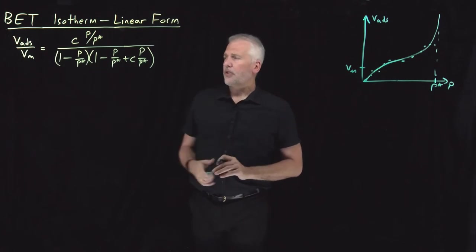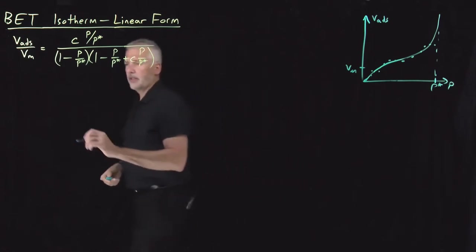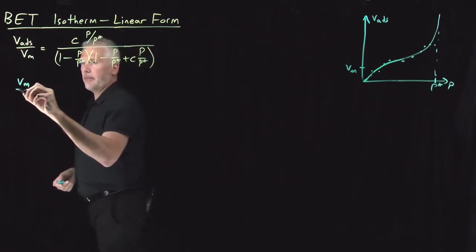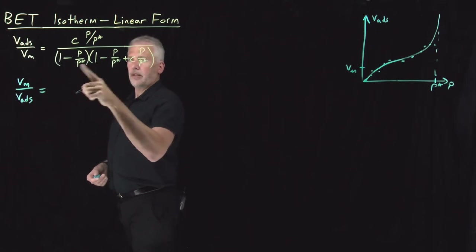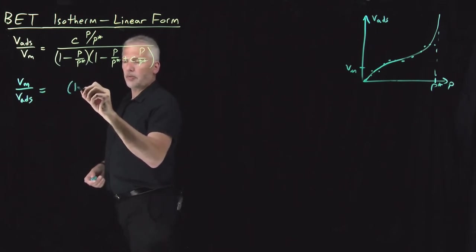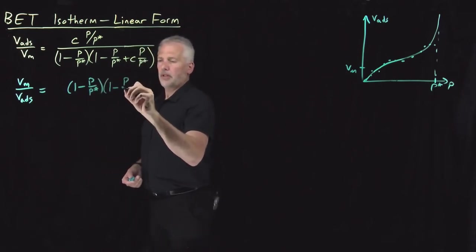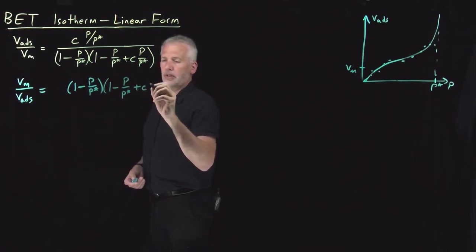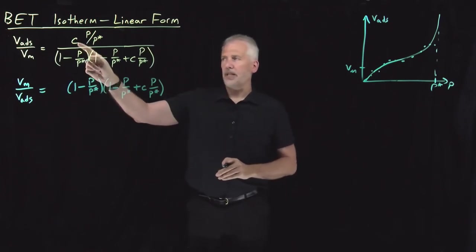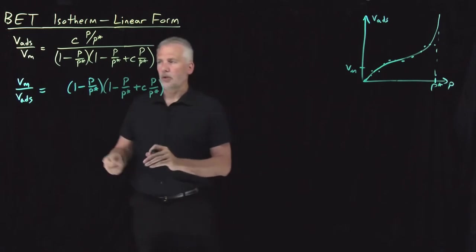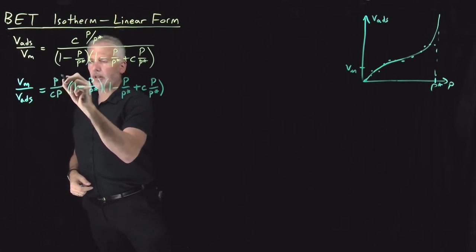So easiest way to start doing that, since I've got a number of things in the denominator, I'd rather have the complicated stuff in the numerator. So let's flip both sides of this equation. So on the left, I've got Vm over the adsorbed volume. On the right-hand side, now I've got these two quantities in the denominator are now up in the numerator. 1 minus P over vapor pressure, and 1 minus P over vapor pressure plus C times P over vapor pressure. In the denominator, I've got CP over P star. So rather than writing that in the denominator, I'll just flip it upside down and write CP under P star out here.